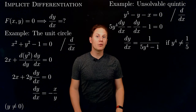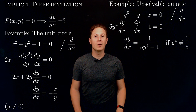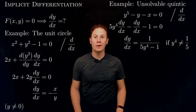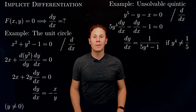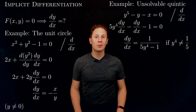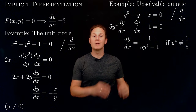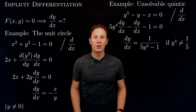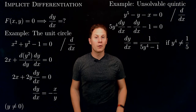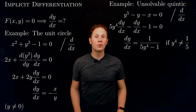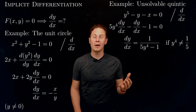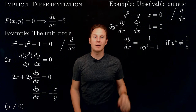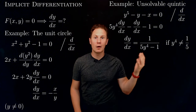We obtain dy/dx equals 1 divided by 5 times y to the 4 minus 1, which is valid whenever the denominator does not vanish. So notice we managed to find the derivative of y with respect to x from an equation that is not even solvable for y. There is no formula for y, yet we managed to find its derivative with a formula.